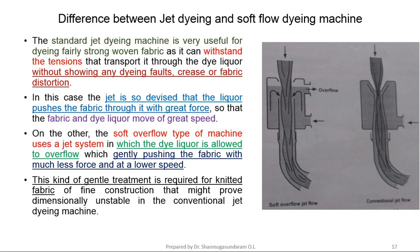Difference between Jet Dyeing and Soft Flow Dyeing Machine: The standard jet dyeing machine is useful for dyeing fairly strong woven fabrics, as it can withstand the tension of being transported through the dye liquor without showing dyeing faults, creases or fabric distortion. In the jet machine, the liquor pushes the fabric through with great force and both fabric and liquor move at very high speed. In contrast, the soft overflow type uses a jet system in which the liquor is allowed to overflow, which gently pushes the fabric with much lesser force and at lower speed. This gentle treatment is required for delicate fabrics.